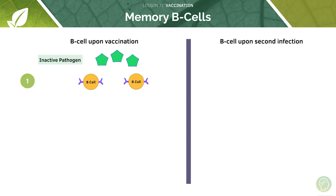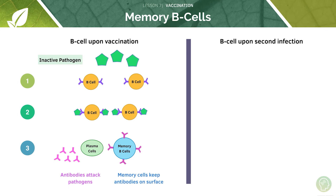The B cells detect this inactive pathogen and bind to the antigen on its surface. This results in two scenarios: number one, the B cell divides to form plasma cells, and the plasma cells produce antibodies which attack the pathogen there and then and eliminate the disease.